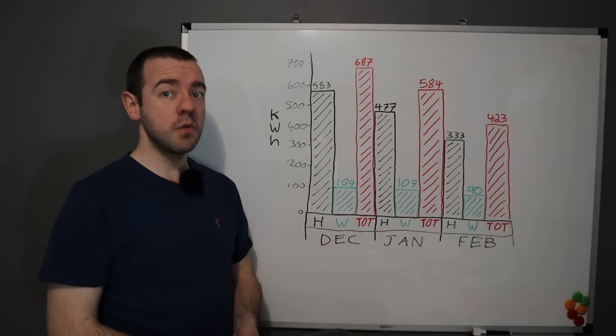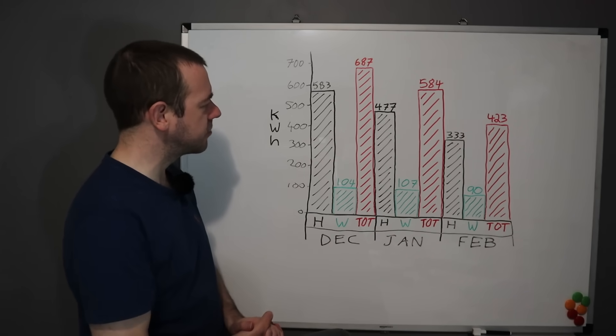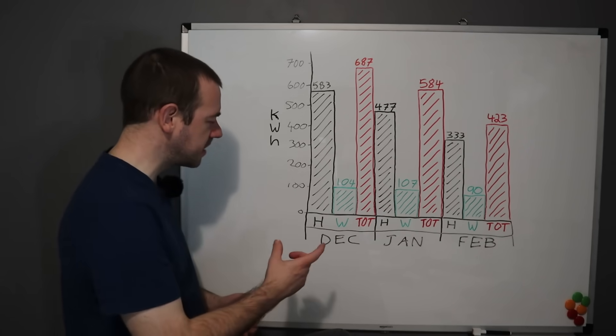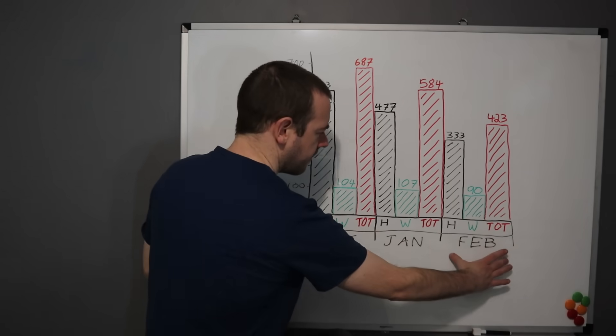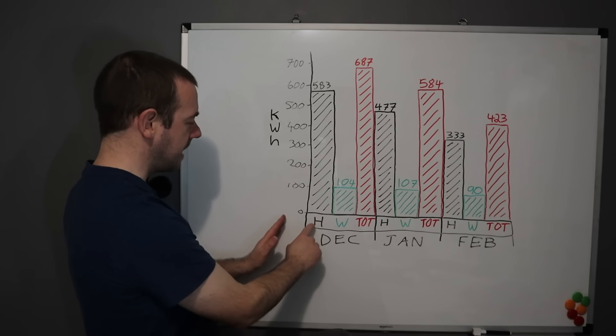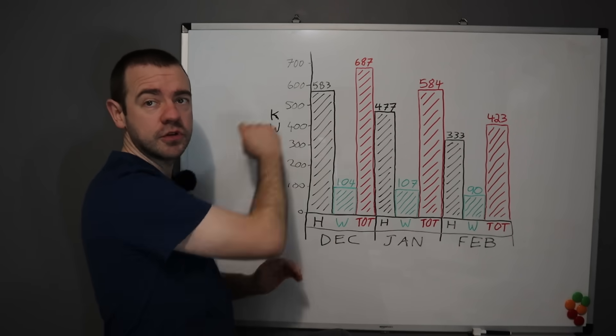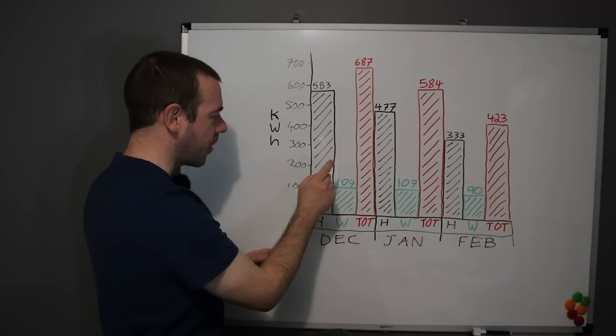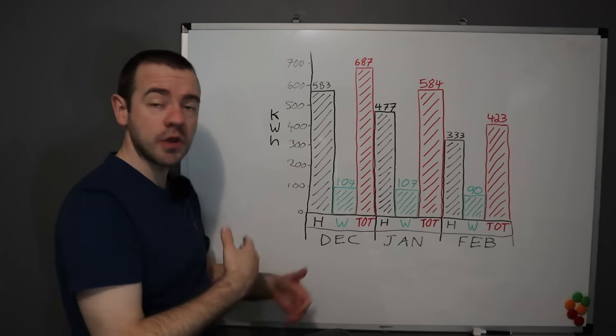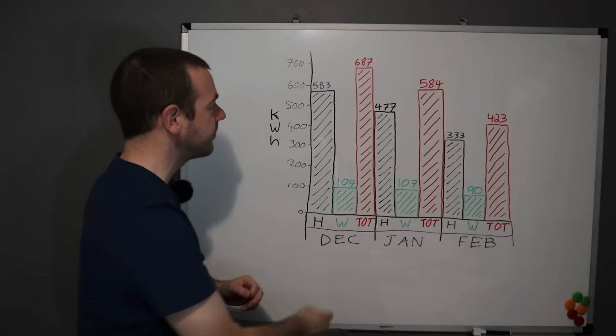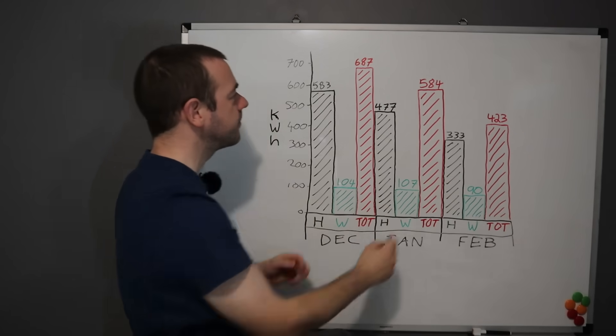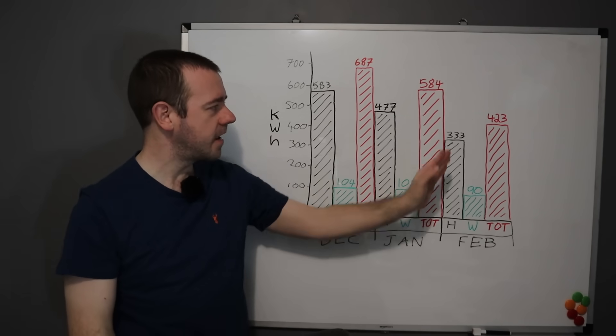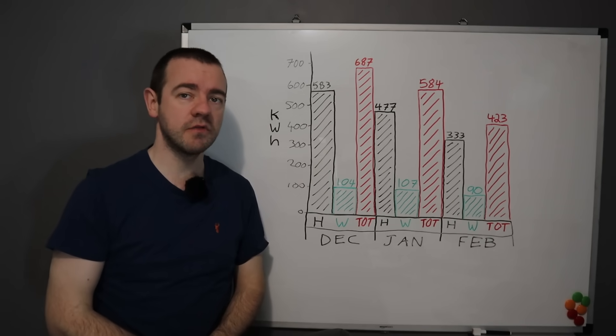It's been too long since we last saw the whiteboard of truth. Here it is with this really badly drawn graph. But it does show just briefly the breakdown of what we have done during the winter months. So we've got December, January, February. And the three bars are the heating. So we've used 583 kilowatt hours worth of electricity to heat our house in December, 104 kilowatt hours to do the hot water because we've got a hot water cylinder.